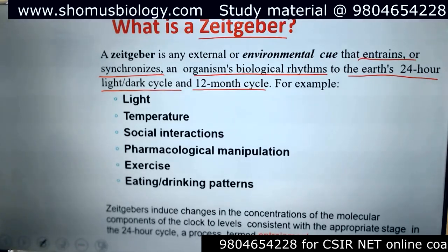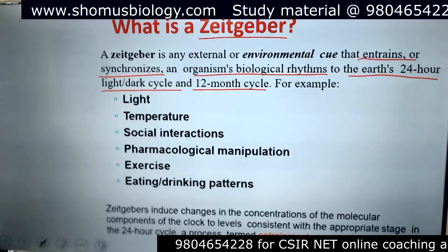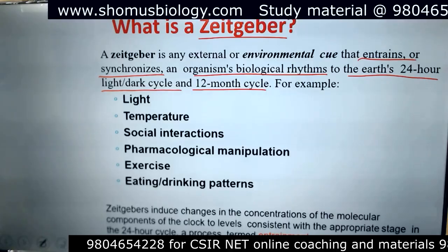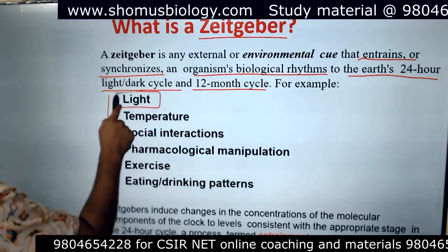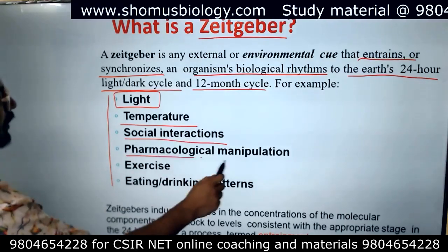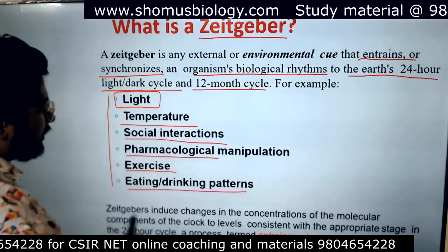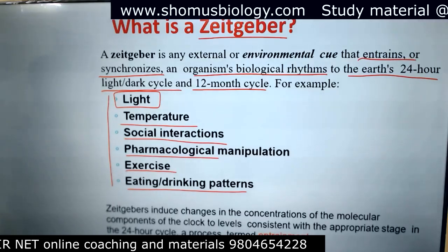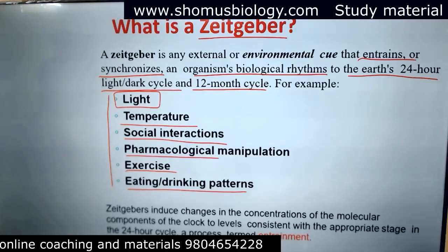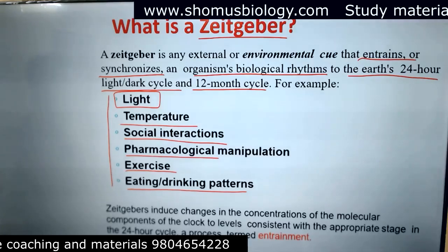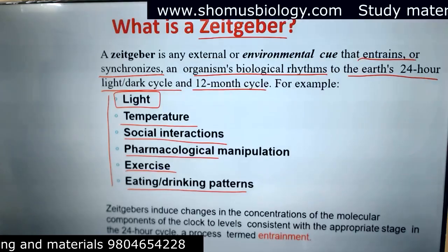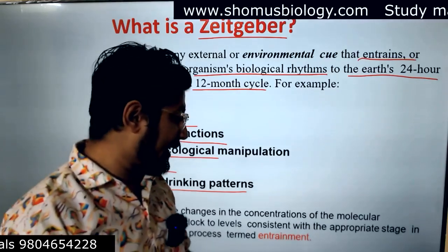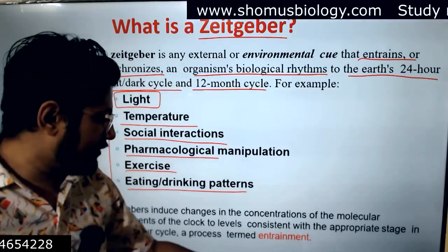Zeitgebers induce a change in the concentration of the molecular components of the clock to levels consistent with the appropriate stage in the 24-hour cycle — a process known as entrainment. Any change in light, temperature, social interactions, pharmacological manipulation (taking drugs), exercise, or eating and drinking patterns will modify the concentration of molecular factors in the body associated with the 24-hour cycle, altering our body's behavior. That alteration is known as entrainment.